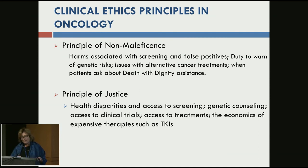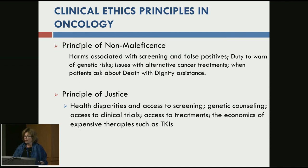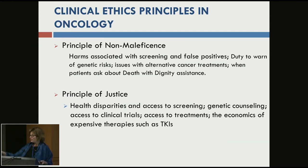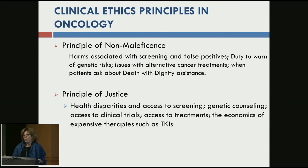The duty to warn of genetic risks is a very big part of prevention of harms. You may have someone with an autosomal dominant mutation with at-risk relatives who refuses to disclose, telling you to keep it confidential. But you may feel you have a duty to warn at-risk third parties — and in fact, the law tells you that you do.